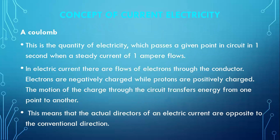A coulomb is the quantity of electricity which passes a given point in the circuit in one second when a steady current of one ampere flows. In electric current, there are flows of electrons through the conductor. Electrons are negatively charged while protons are positively charged.